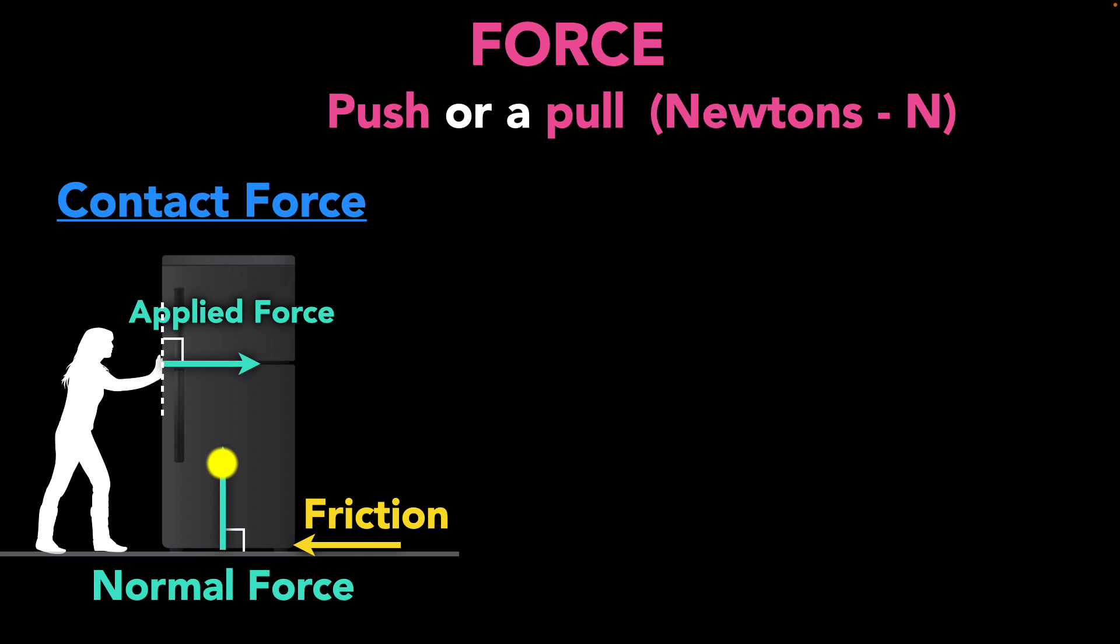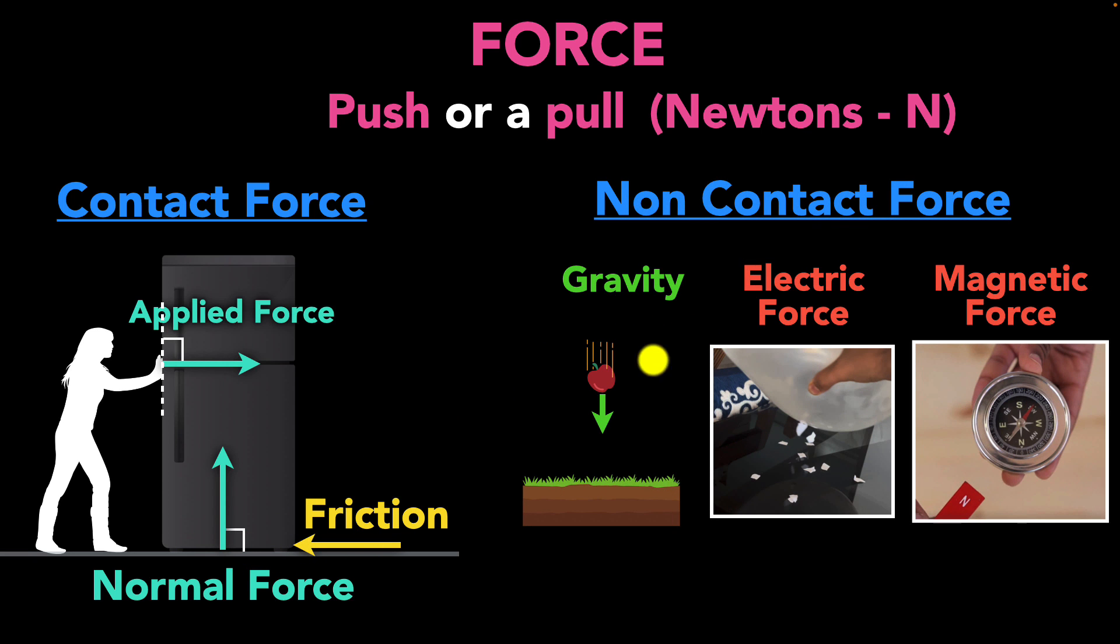The two common ones are the normal force, where the force is perpendicular to the surface, and the frictional force, which is a force that's parallel to the surface. And you can have non-contact forces like gravity or electric force or magnetic forces. Here, the forces are exerted without having a contact.